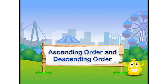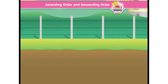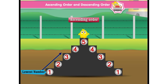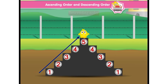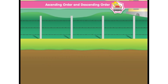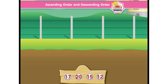Ascending order and descending order: ascending order is like going up on the stairs, starting from the lowest number to the greatest number. Descending order is like going down on the stairs, starting from the greatest number to the lowest number. Look at this set of numbers: 17, 20, 15, 12.